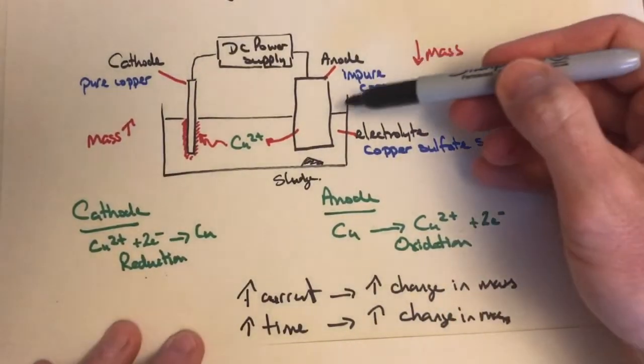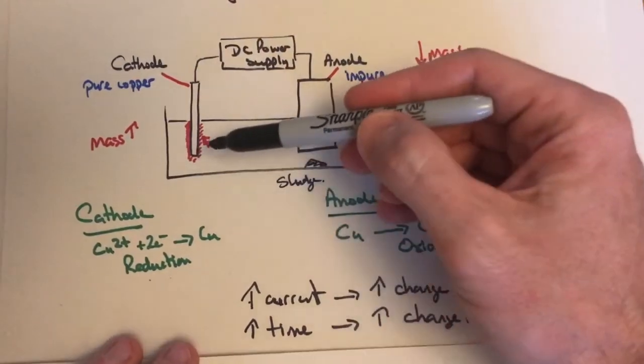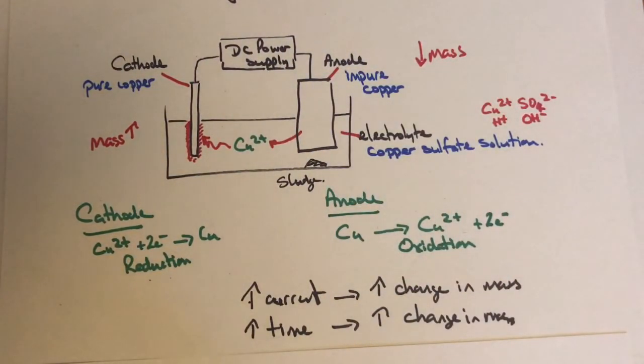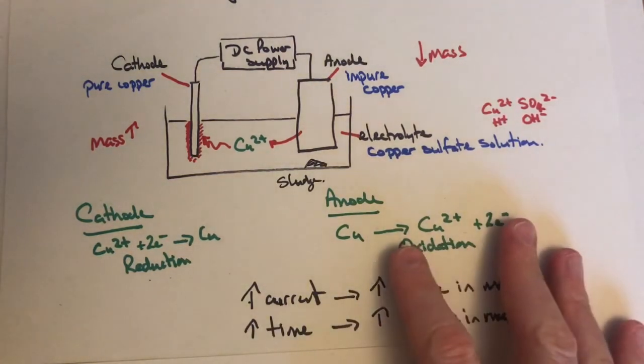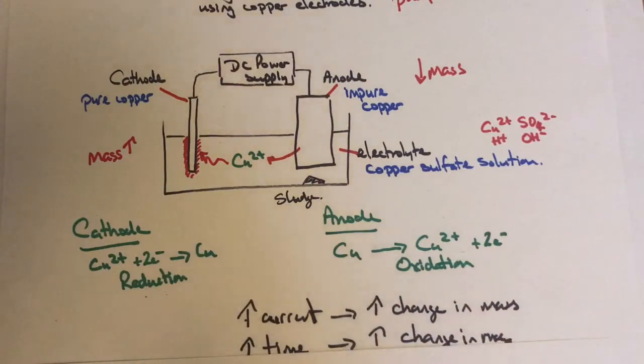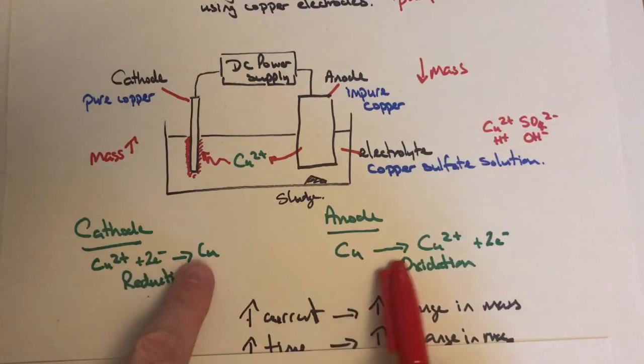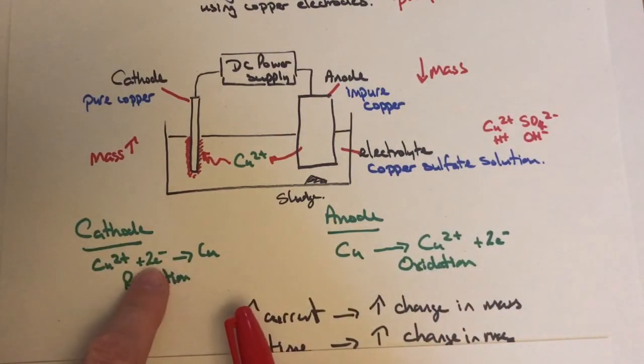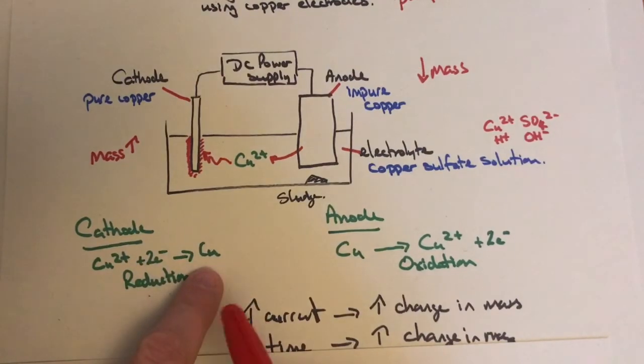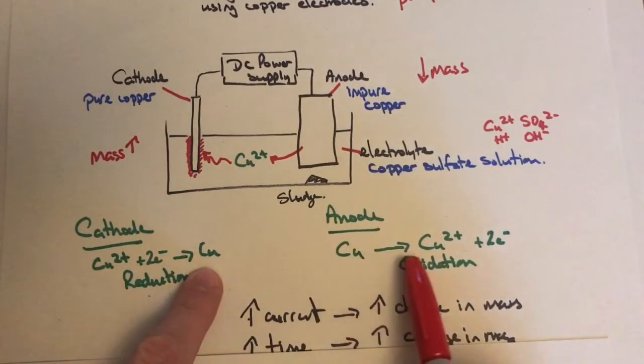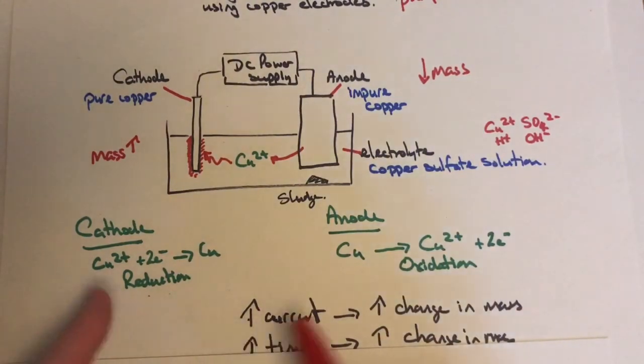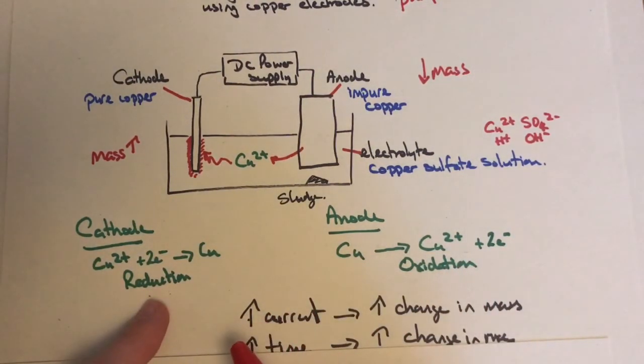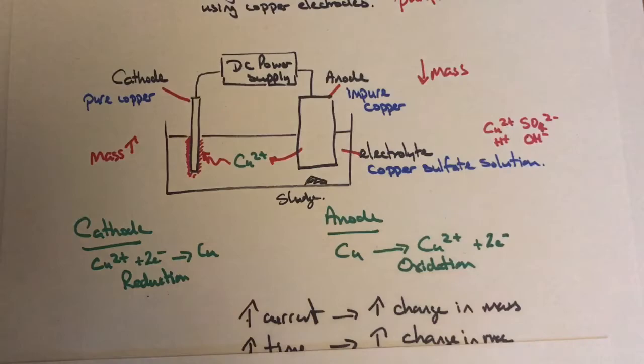Something to notice about these two equations: they're the same equation just flipped the other way around. At the cathode, copper ions gain electrons forming copper metal. At the anode, copper metal breaks down to ions releasing electrons. The same equation reversed—one is reduction and one is oxidation.